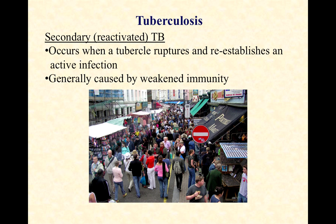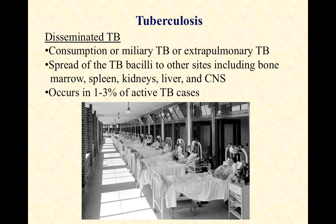Finally, disseminated TB — fortunately extremely uncommon in modern times. This used to be called consumption, miliary TB, or extra-pulmonary TB. The idea is that one or more tubercles ruptures and the microbes get into the bloodstream and spread, almost like a cancerous tumor metastasizing, establishing infection in other regions of the body. The TB can get into places like the bone marrow, the spleen, the kidneys, the liver, and the central nervous system. This occurs in a very small percentage of active TB cases, is very difficult to treat, and has a very high mortality rate. If you want to make a big difference in the world, go into tuberculosis work, because so much of the world is positive for it and we really are at a loss in terms of how to control it, especially these MDR and XDR strains.